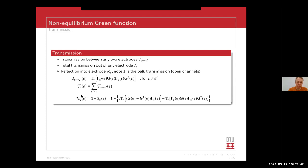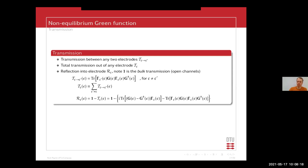Note a small numerical problem: if you have a very large electrode with, say, 100 open channels, this calculation can be a little bit numerically unstable simply because of the large numeric values involved. For small electrodes this is not a problem. I've just experienced that for very large electrodes, the accuracy may be a little bit problematic.